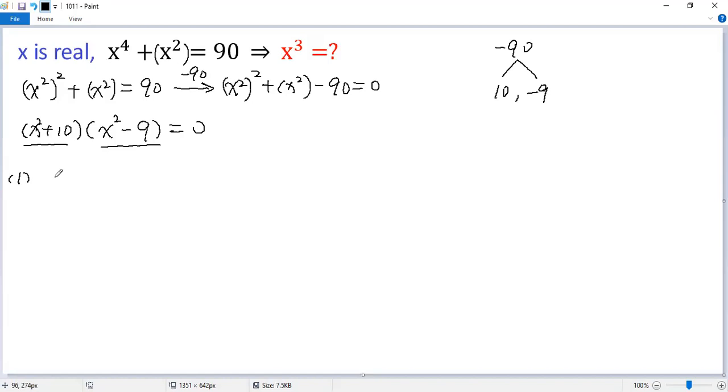If the first factor equals 0, then x² + 10 = 0. Subtracting 10 from both sides,